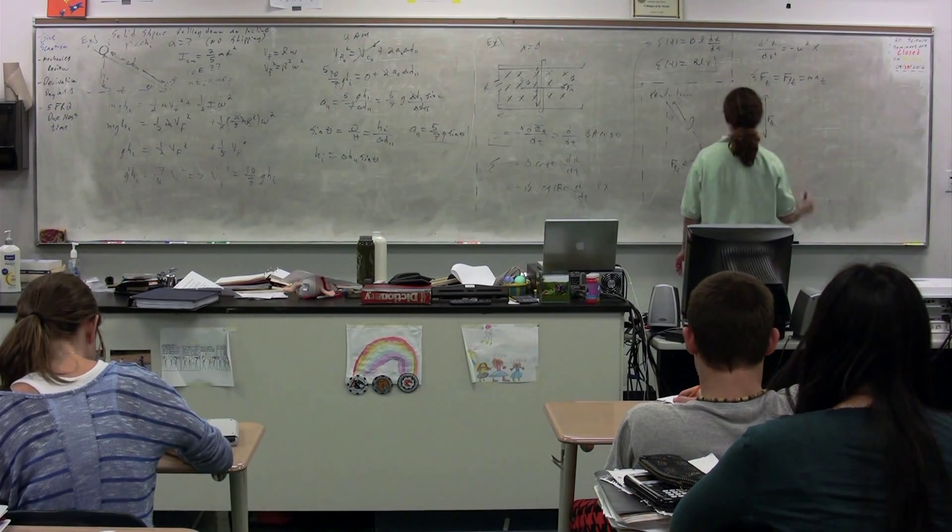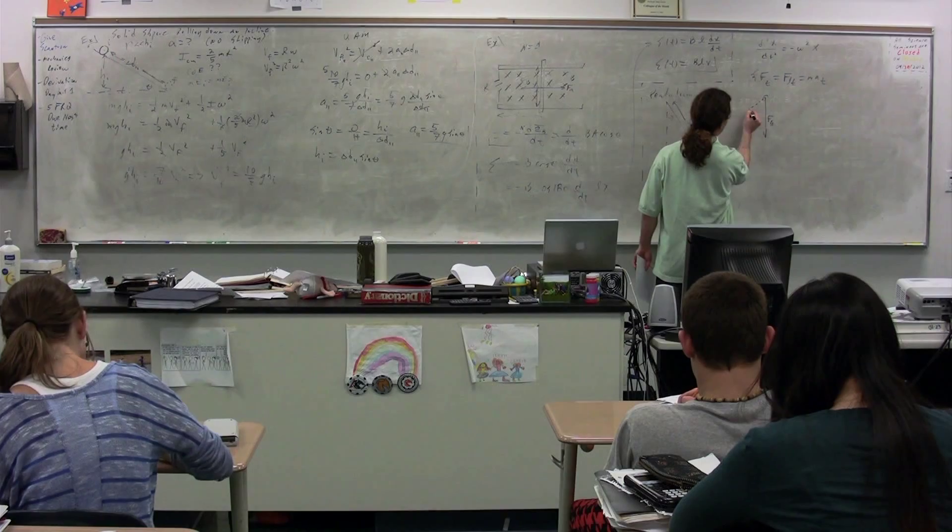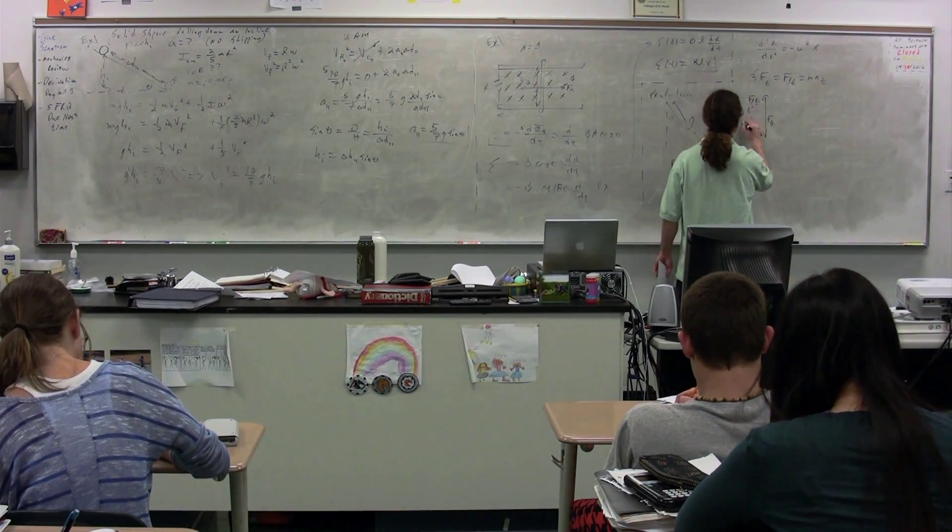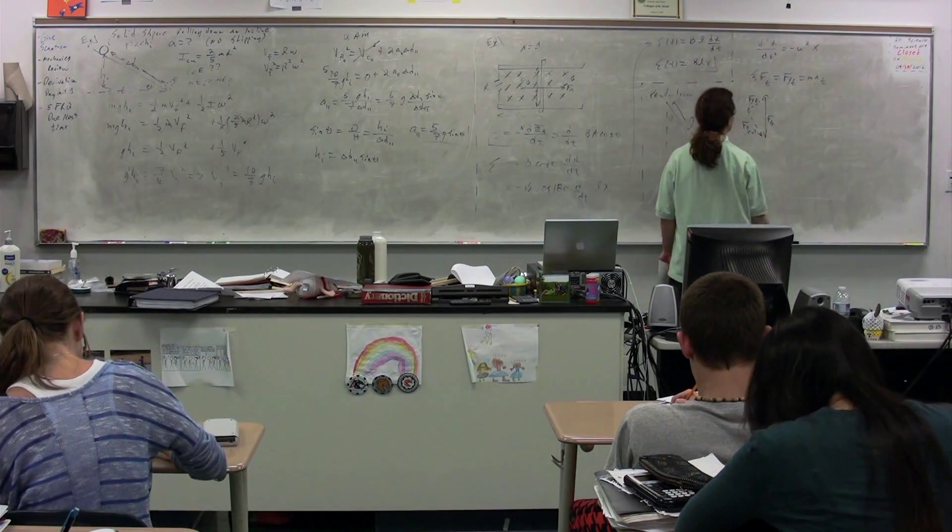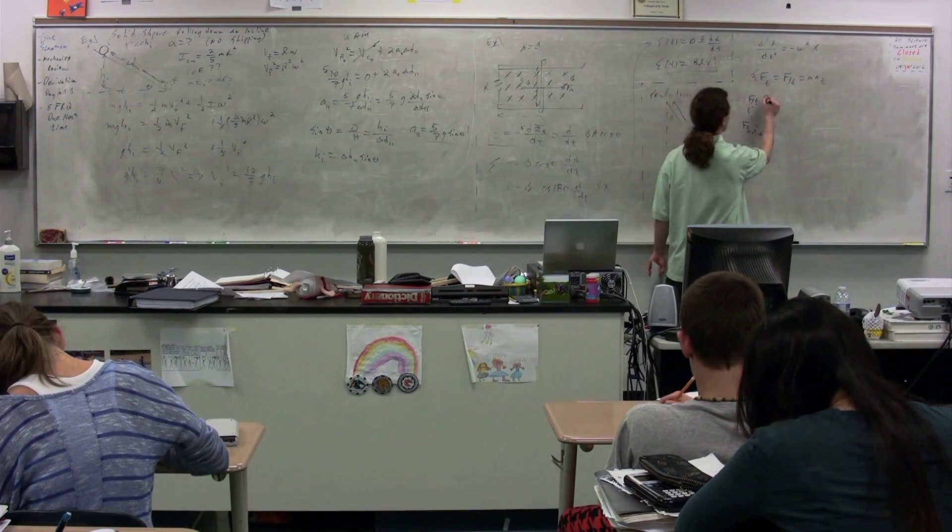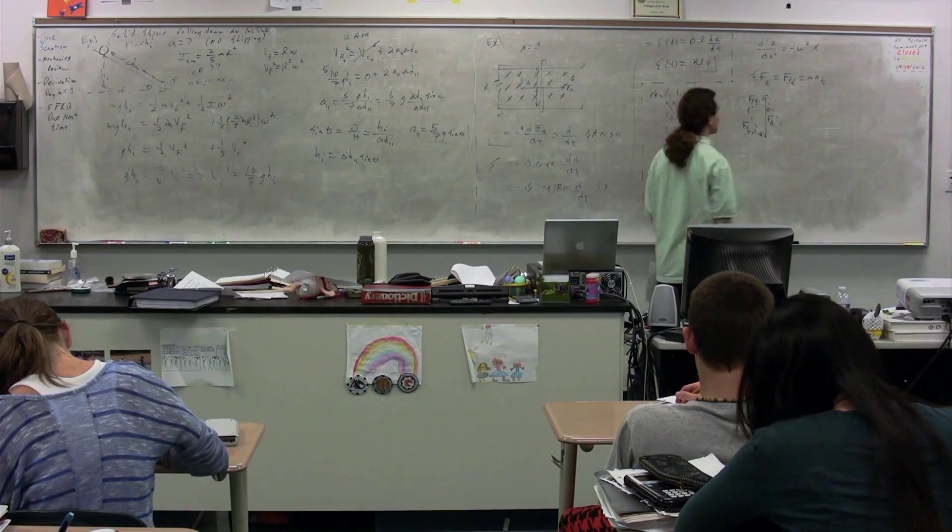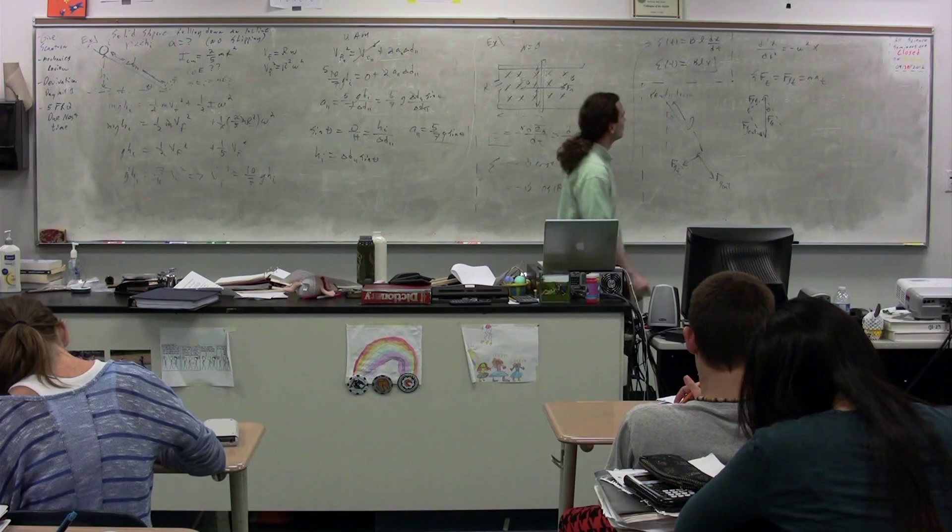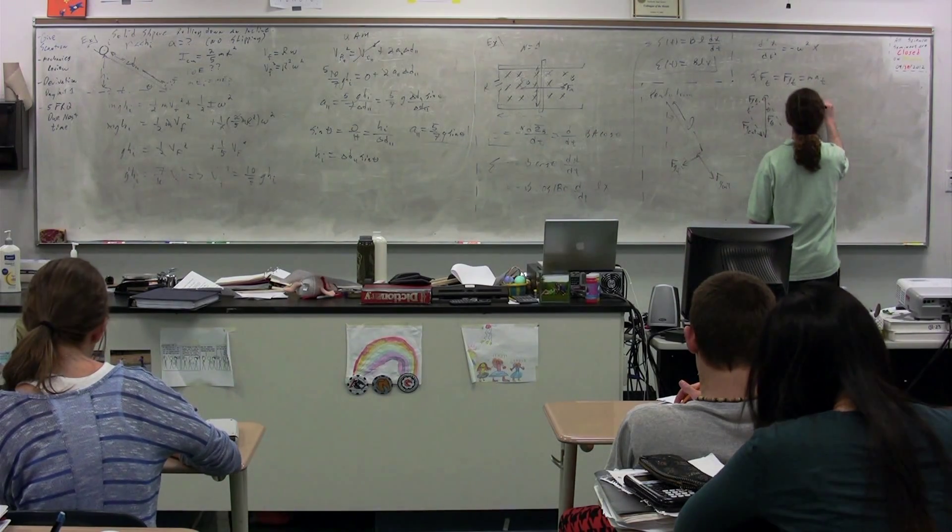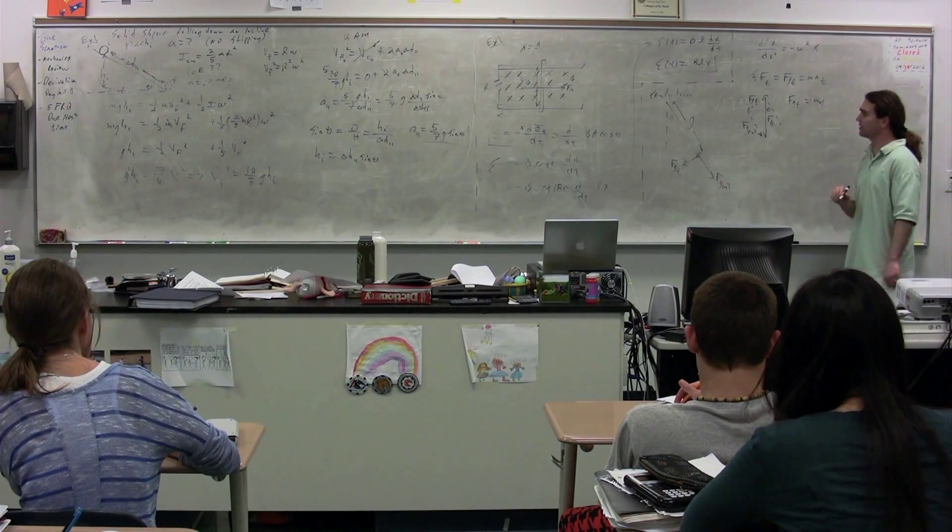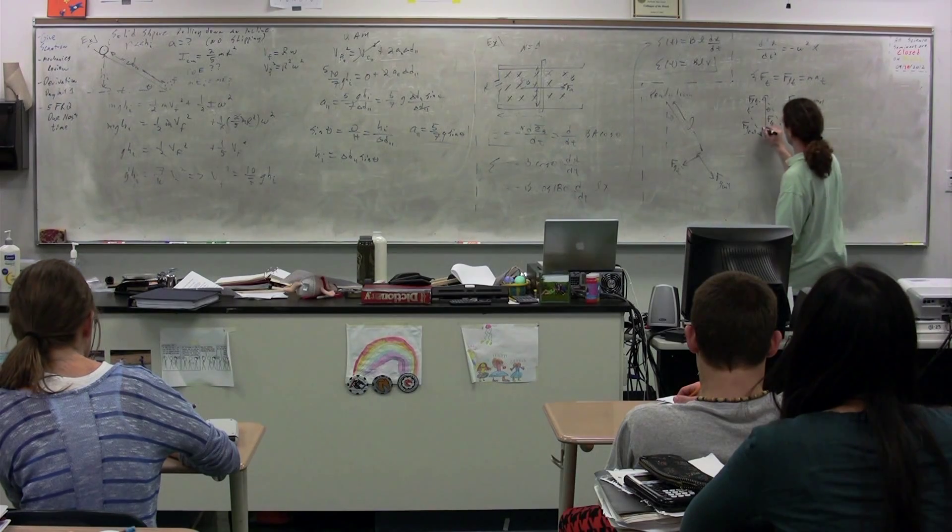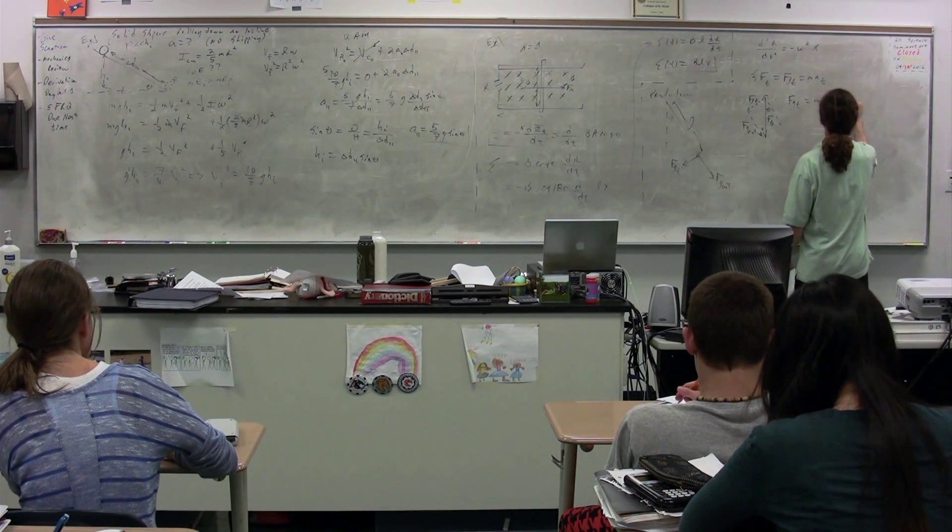The force of gravity would be straight down. Now, this would be the force of gravity tangential. This would be the force of gravity out. Notice, this is theta, which means this is theta right there, which means that the force of gravity tangential is equal to mg times, class, sine or cosine theta? Sine, right, because this is the angle here, so it times the sine of theta.